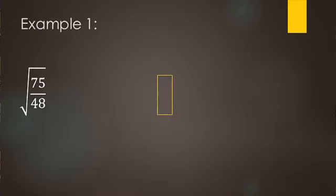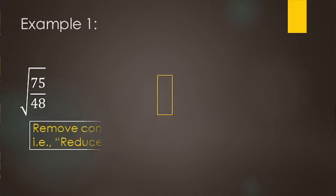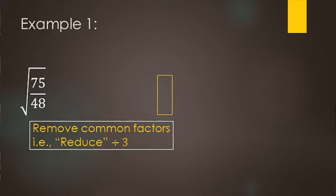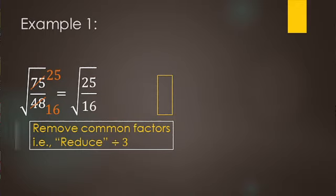We have the square root of 75 over 48. With any of these fraction-type ones, you want to start by asking: can I reduce the fraction or remove common factors? Yes — we can remove a factor of three. 75 divided by three makes 25, and 48 divided by three gives us 16. So rewrite that as square root of 25 over 16.